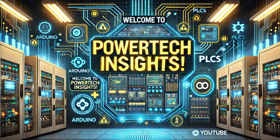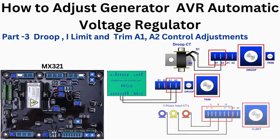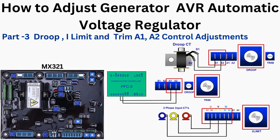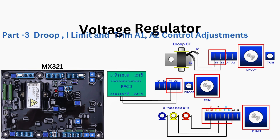Welcome to Powertech Insights. In this tutorial, I will provide a comprehensive guide on how to adjust and commission a generator AVR automatic voltage regulator, part 2. In this part, we're going to learn how to adjust droop, I-Limit, and Trim A1, A2 control. Let's get started.